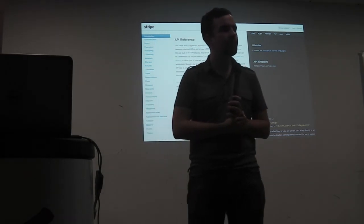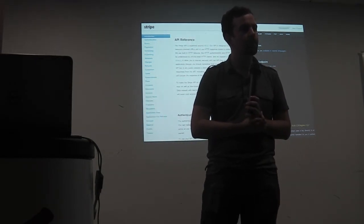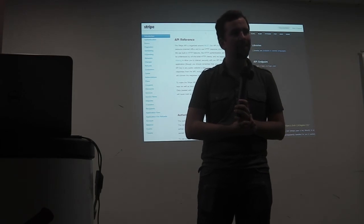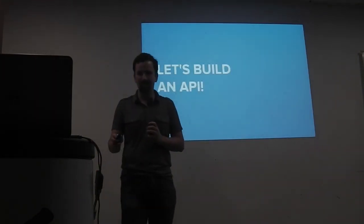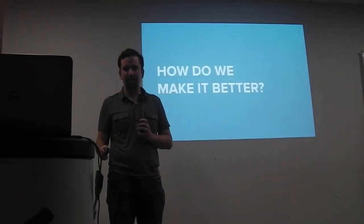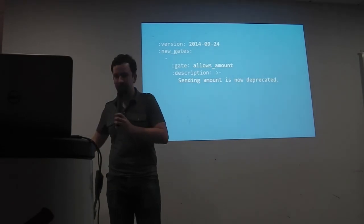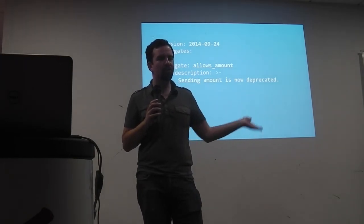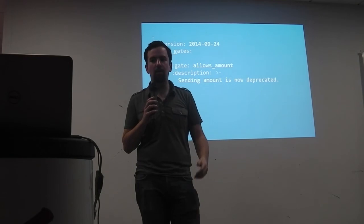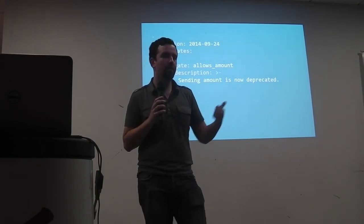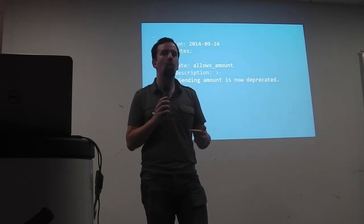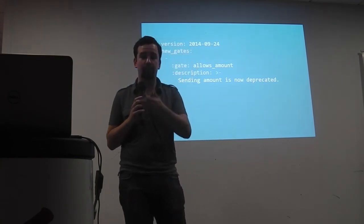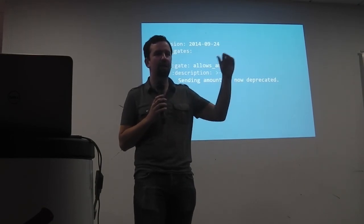Question: You said you have 65 different versions — each time you release a new version, do you deploy a new server? Wouldn't you then have millions of servers? No, we don't deploy a new server for every version. This is all running within a single code base. We push new code to all our API machines and they all do the routing. Versions are handled via either a lookup on the merchant saying "this is the version you're on," or a header they pass us asking what version to be on. We don't need new servers for every version we support — it's just extra change log lines.